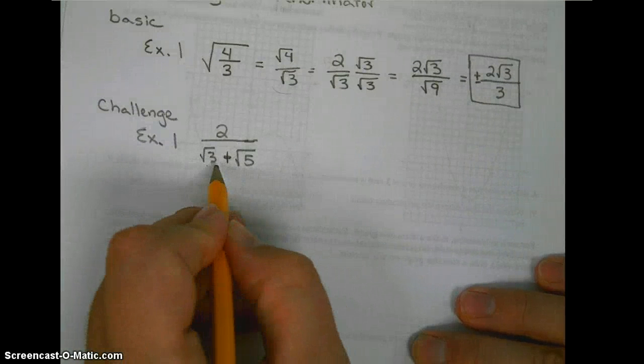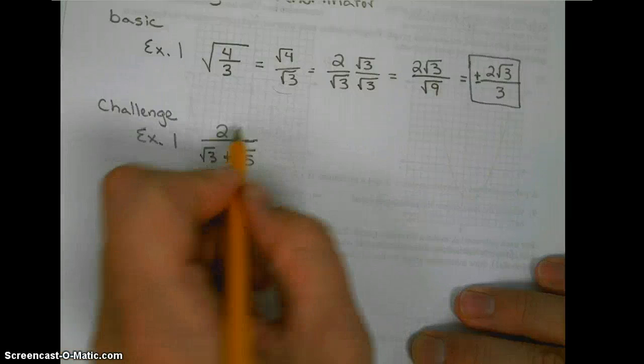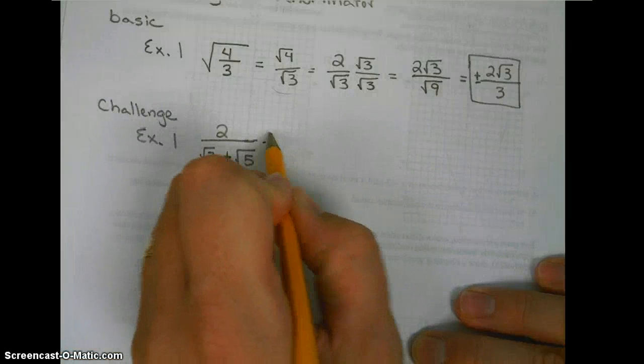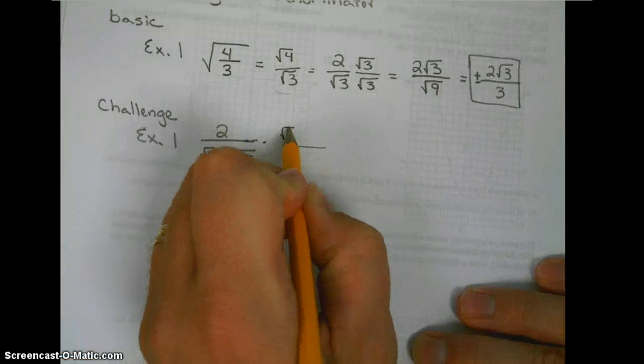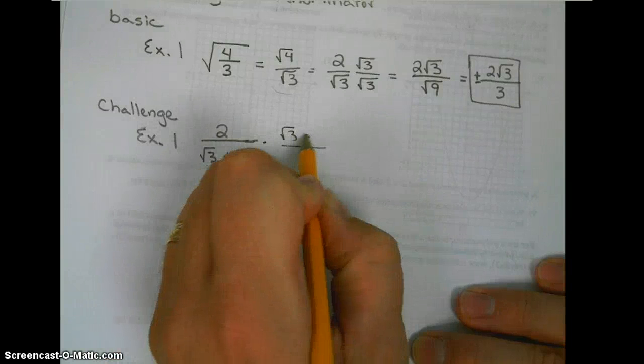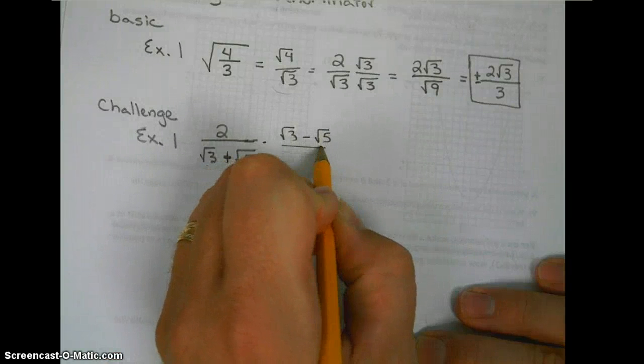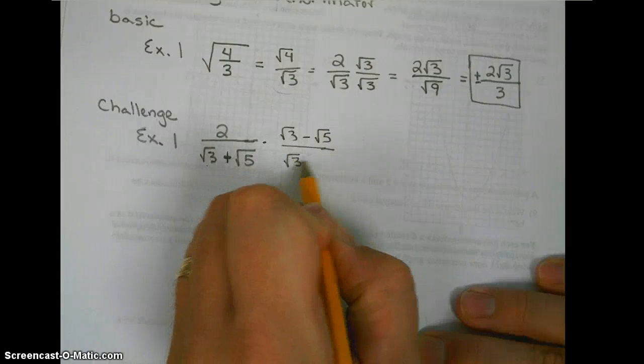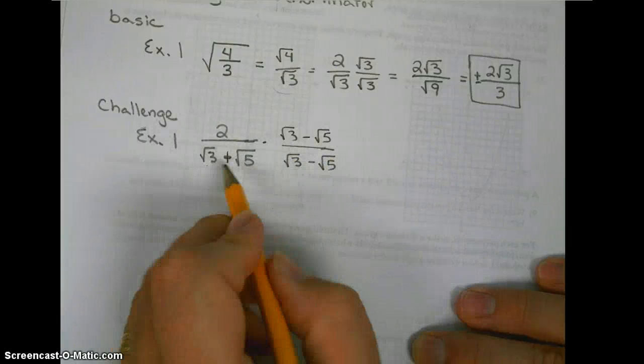To get rid of it, we multiply by its conjugate. Its conjugate will be the square root of 3 minus the square root of 5 over the square root of 3 minus the square root of 5. That is the conjugate.